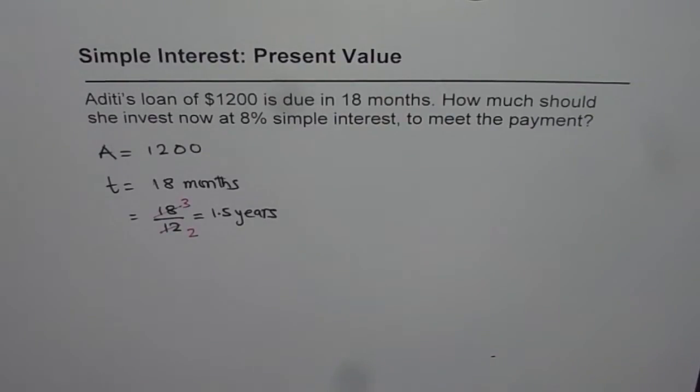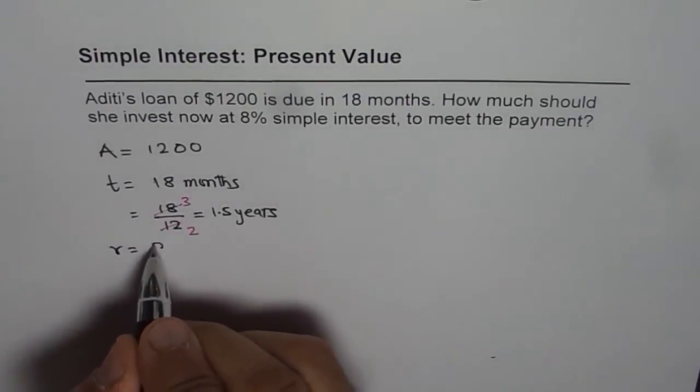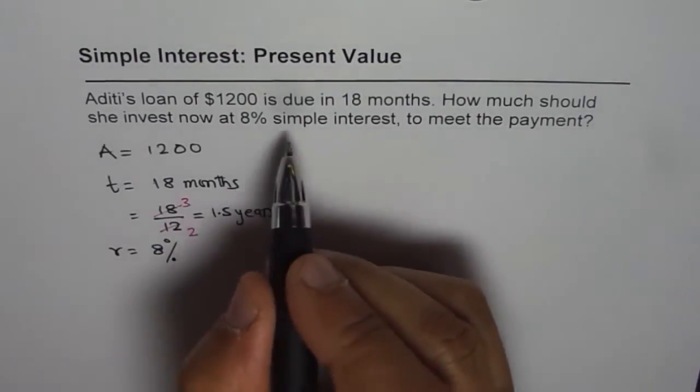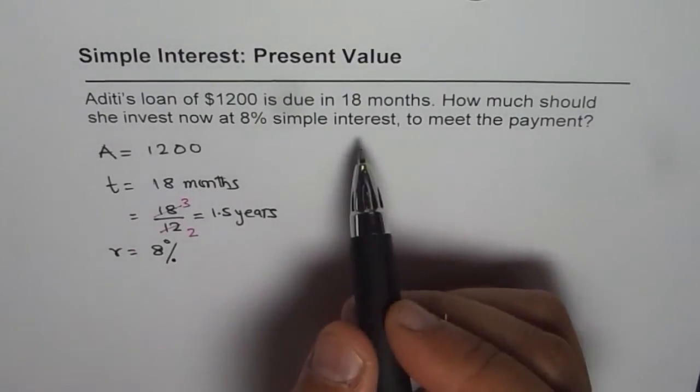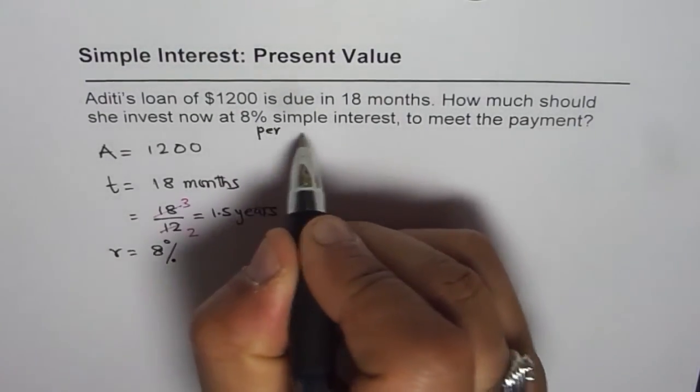Now the question is, how much should she invest now at 8% simple interest? That means r is also given to us, which is 8% per annum. Whenever we are given simple interest, it is per annum.